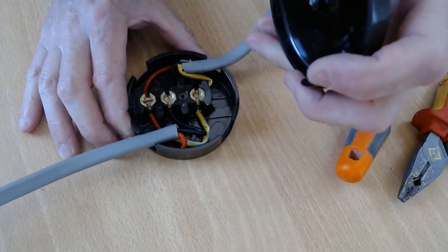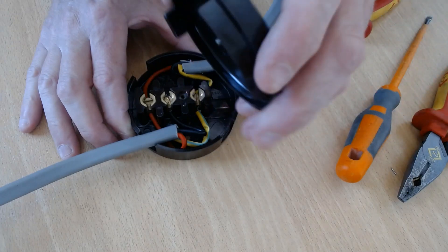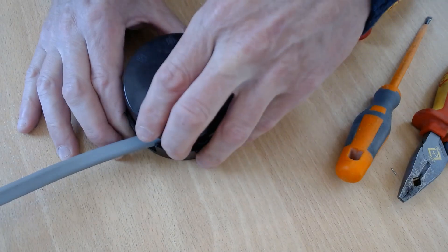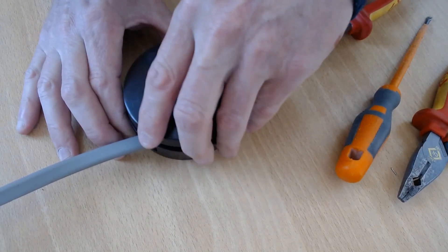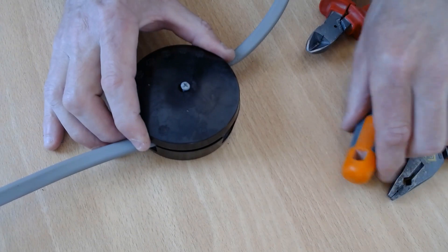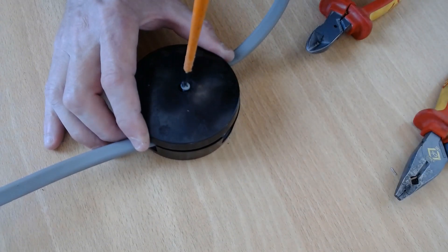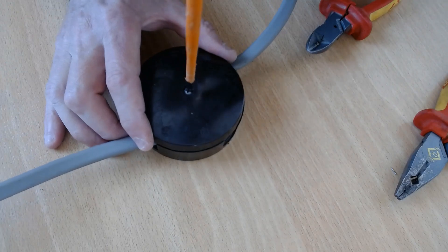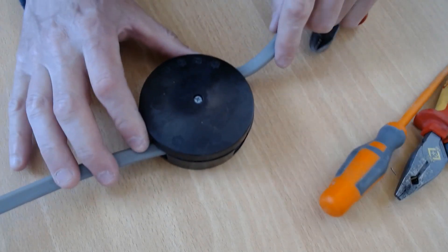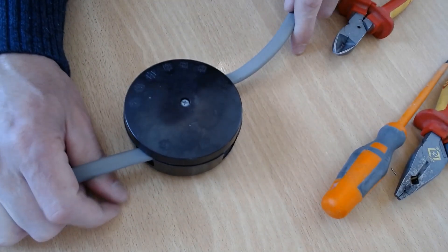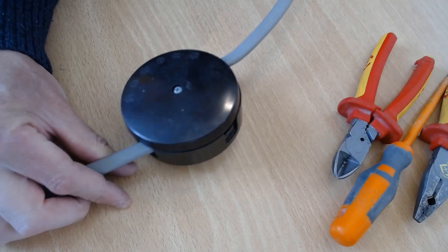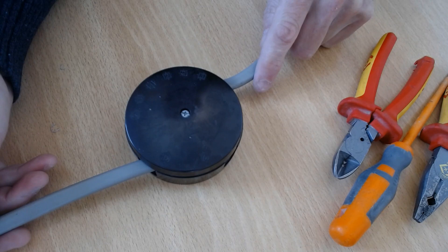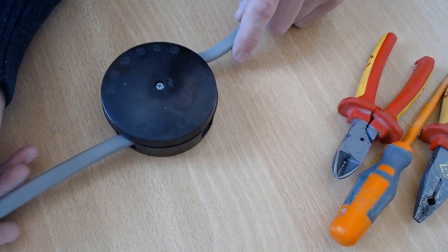Then you get your lid. Make sure that it's not going to sit on top of the cables. Get your lid, screw your lid down. You don't have to screw these box up under the floor, you can leave it loose. That's it, back on.